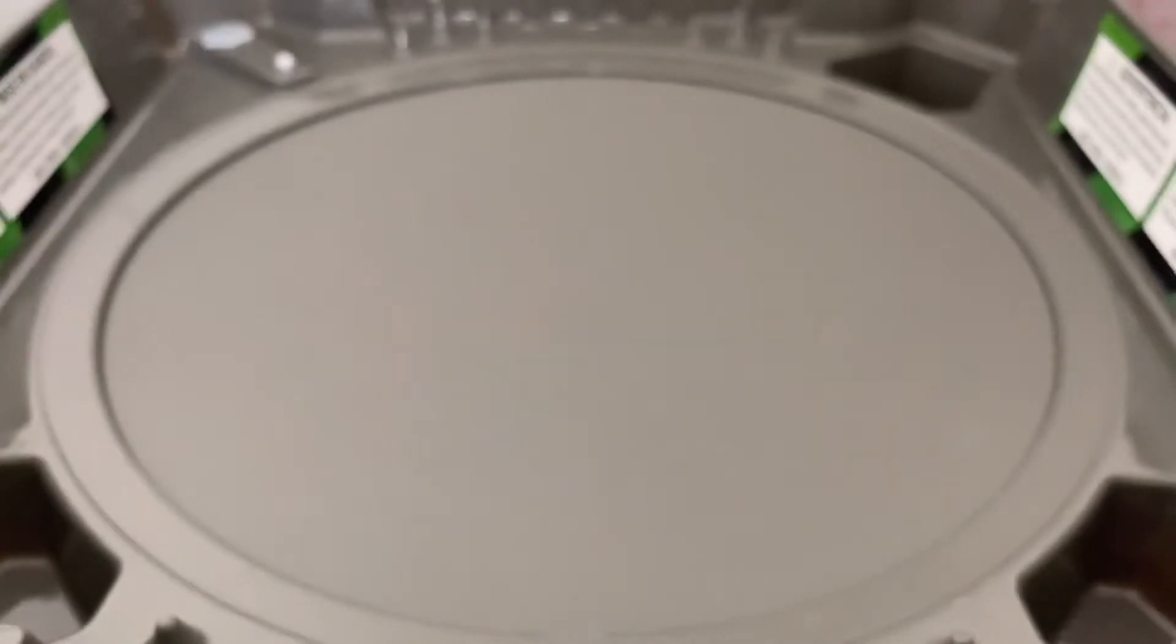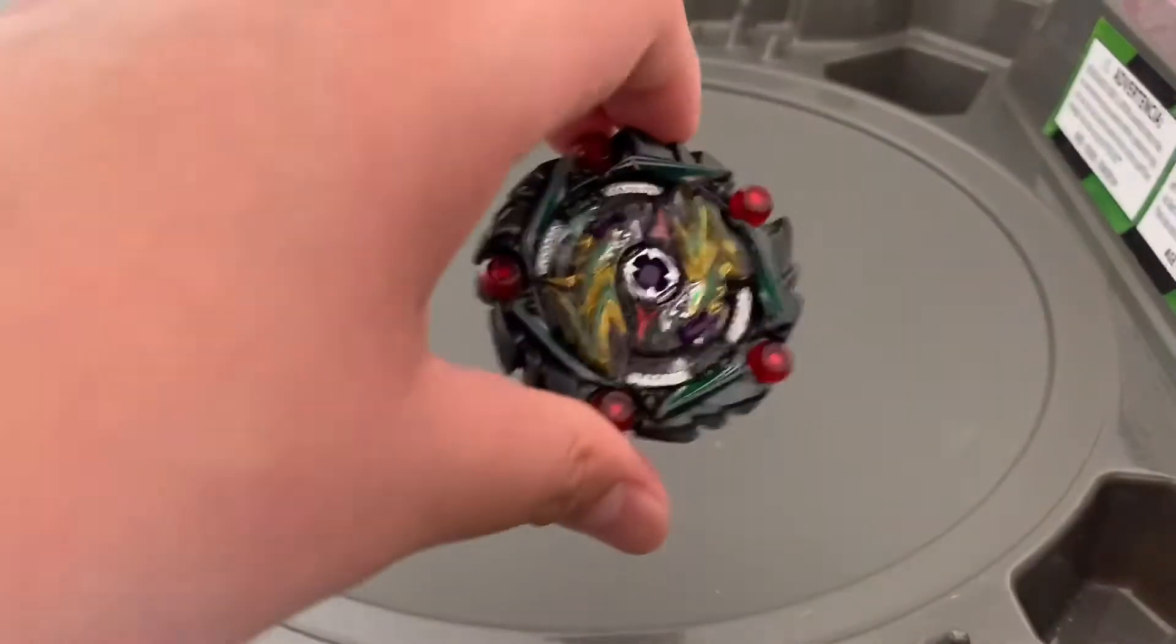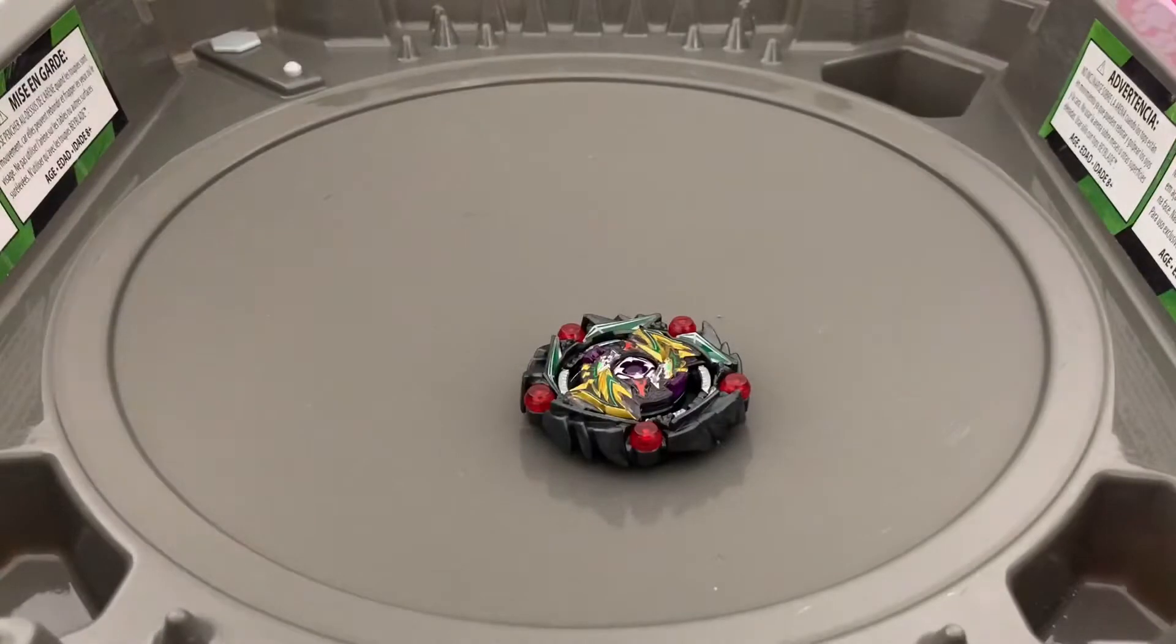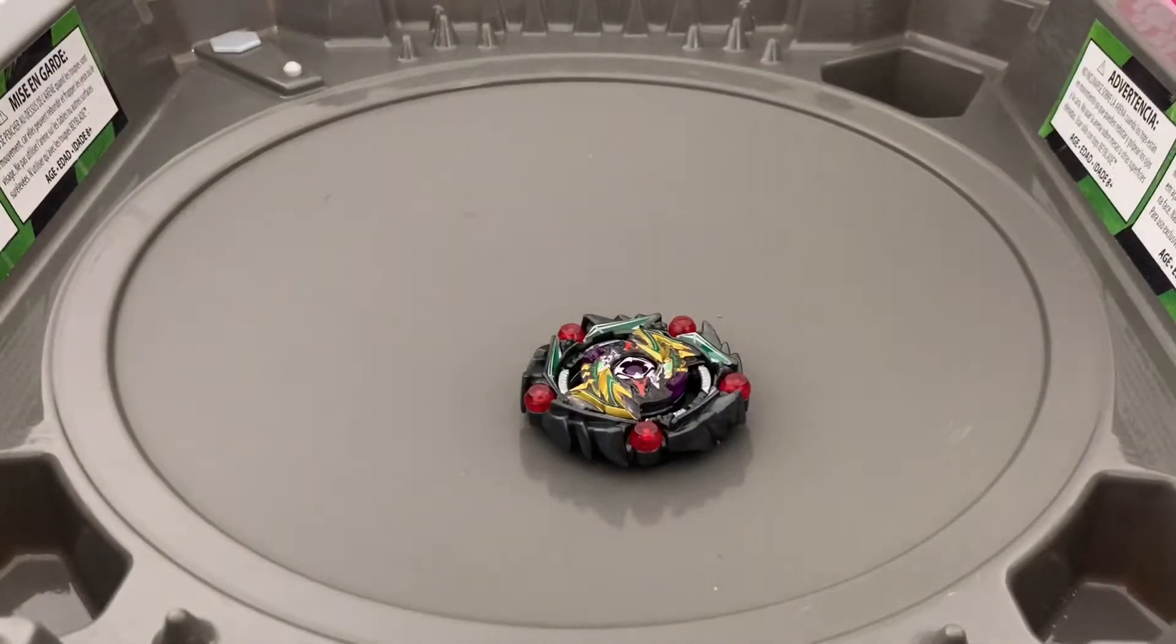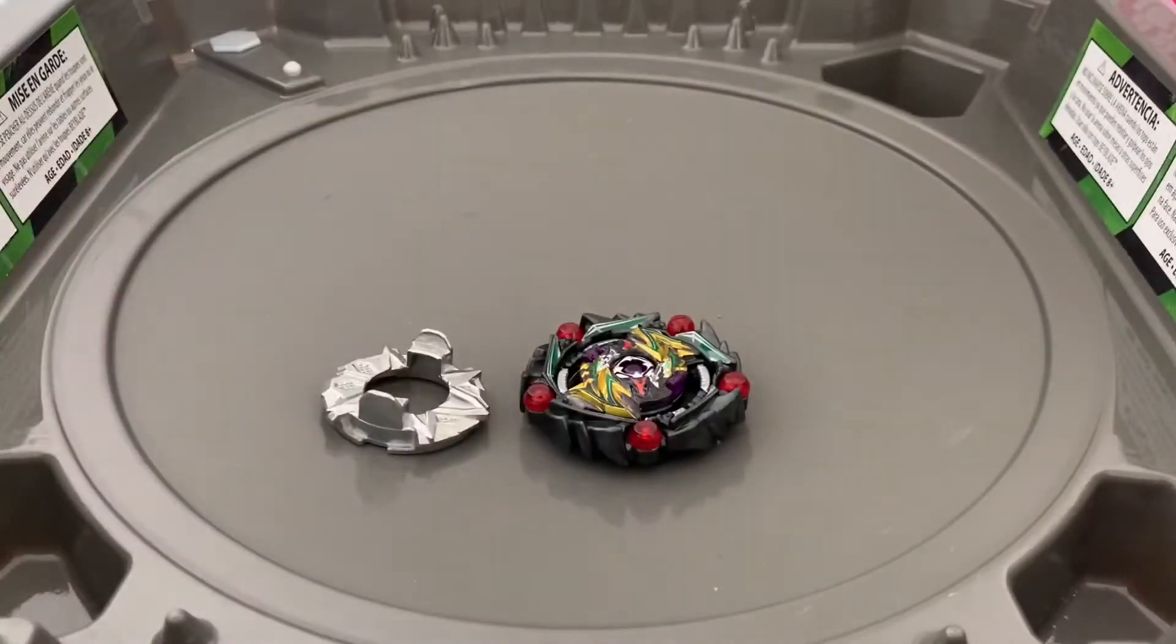So today we're going to be making the best stamina slash life after death combo. What we need is first Curse the Tomb with the chassis on, the 1D chassis. So we'll take that later. I think you can use any disc, but I think the heaviest one I have is 1 dash. So I'm going to put it there.